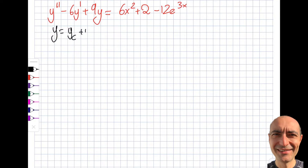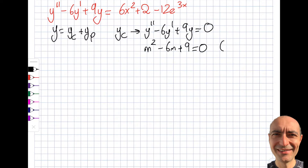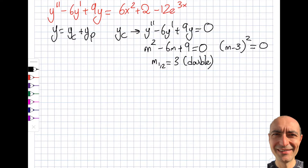The approach doesn't change. At the end of the day I have a complementary solution and a particular solution. The complementary solution is obtained by setting the equation equal to zero. I can see that this factors as (n minus 2) squared, so I get a double root of 3. Writing the yc part, I get c1·e^(3x) plus c2·x·e^(3x).